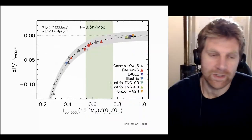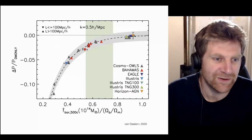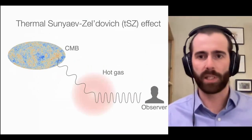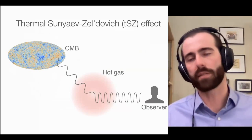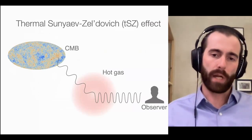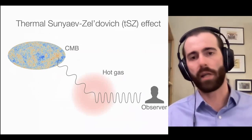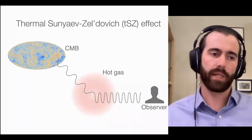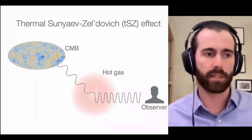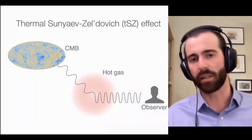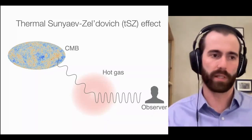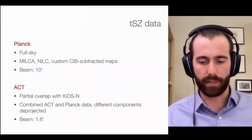The tSZ - Sunyaev-Zel'dovich - effect works by having low-energy photons from the CMB scattered by hot electrons as the CMB travels through the universe. You see a shift in the CMB spectrum to higher frequencies due to upscattering from intervening hot gas. The thermal tSZ effect probes the gas pressure - the product of gas density and temperature - which is what we use in this paper.